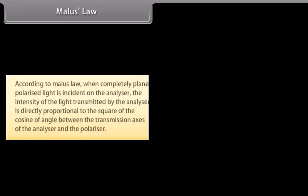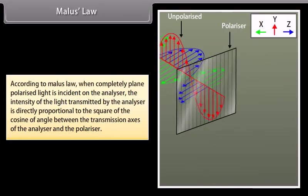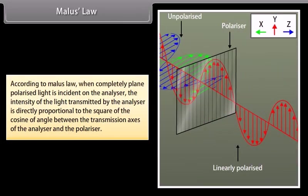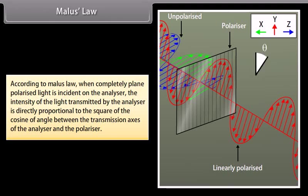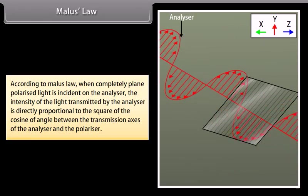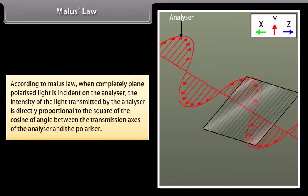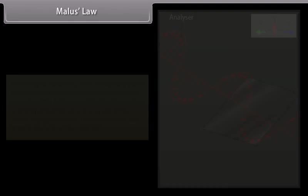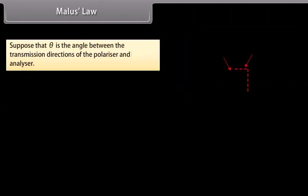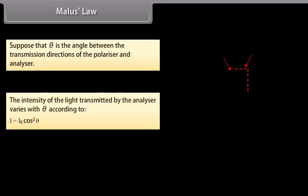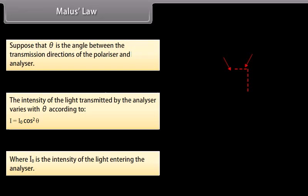According to Malus's law, when completely plane polarized light is incident on the analyzer, the intensity of the light transmitted by the analyzer is directly proportional to the square of the cosine of the angle between the transmission axes of the analyzer and the polarizer. If θ is the angle between the transmission directions of the polarizer and analyzer, then the intensity transmitted is given by I = I₀ cos²θ, where I₀ is the intensity of the light entering the analyzer.